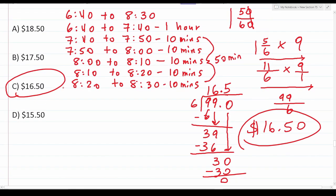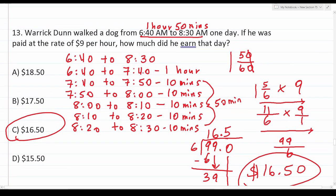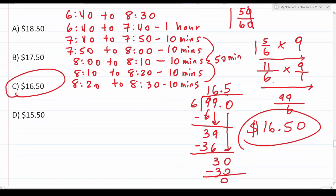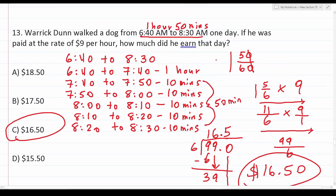To solve this type of problem on the ASVAB, you need to be good at telling time, expressing hours and minutes as fractions, and multiplying a mixed number by a whole number. There are quite a few steps to get this one right.